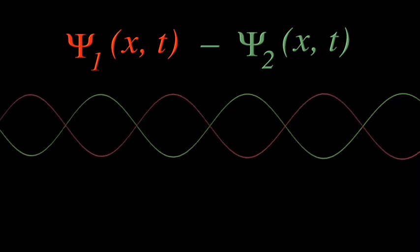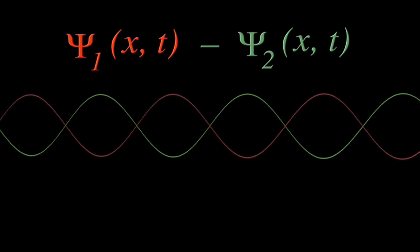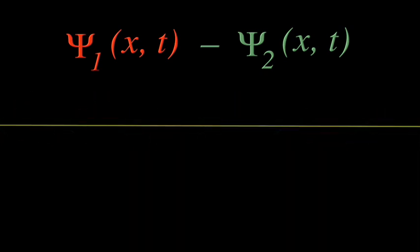If the electrons are in the same state, these two waves will be a mirror image of one another. As one goes up, the other goes down in perfect synchrony. So when we combine them, we get no wave at all.